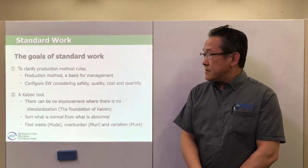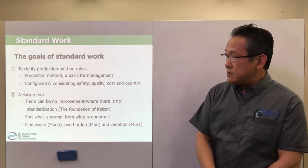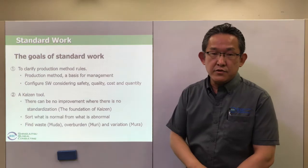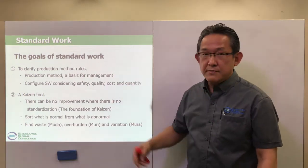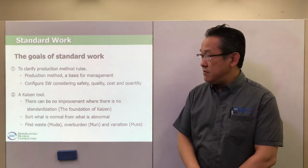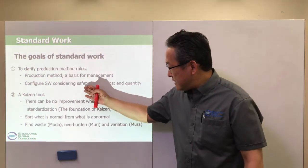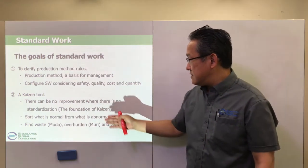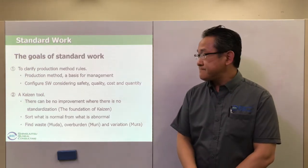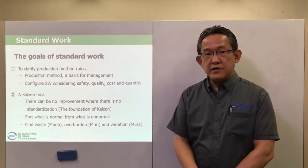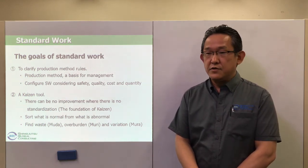Next is the purpose of standard work. It has two purposes. The first is clarifying the rules on how to do the work and then using it as a tool for management. Standard work is decided by considering safety, quality, cost, and quantity. It can be said that the standard work rule is an efficient way of working without muda.